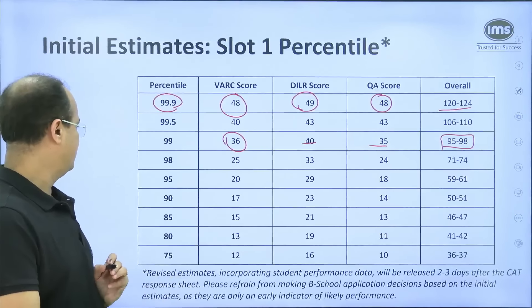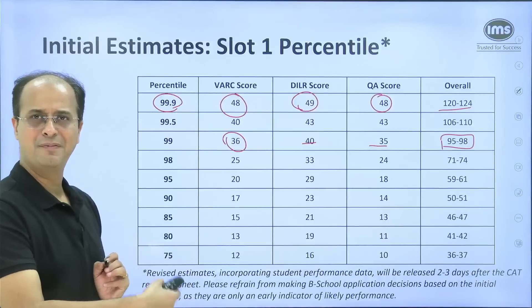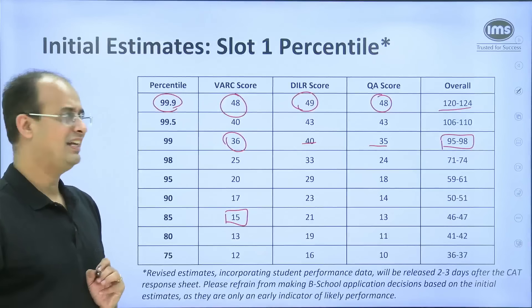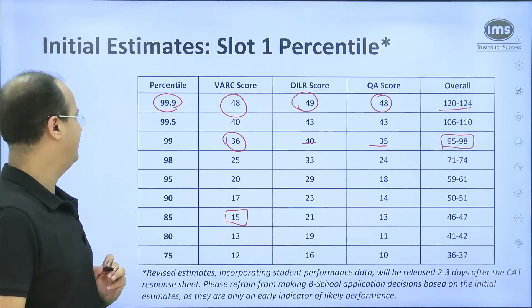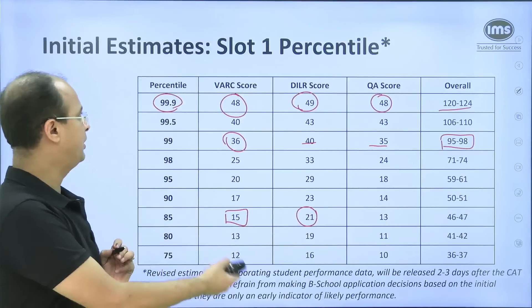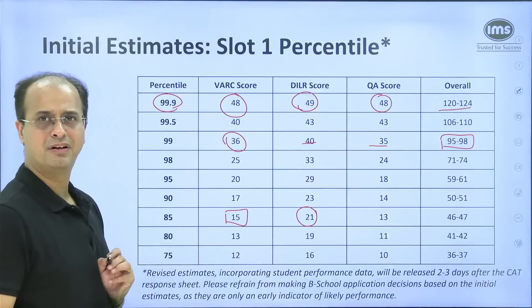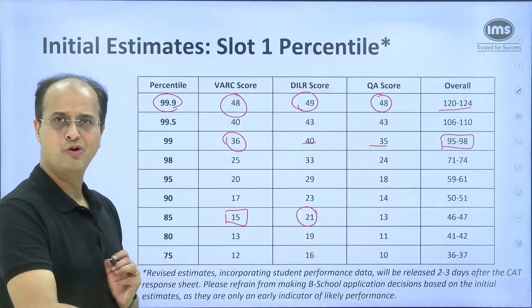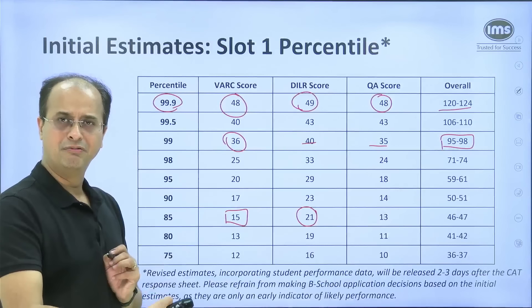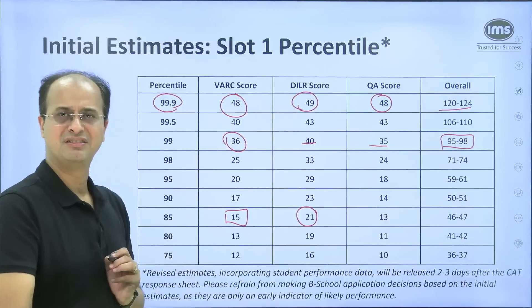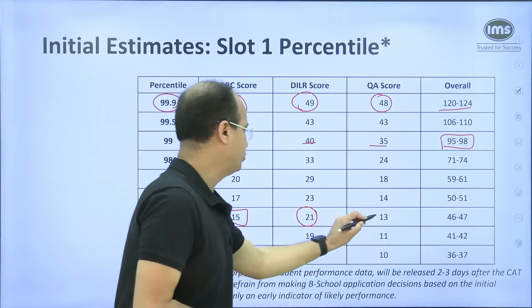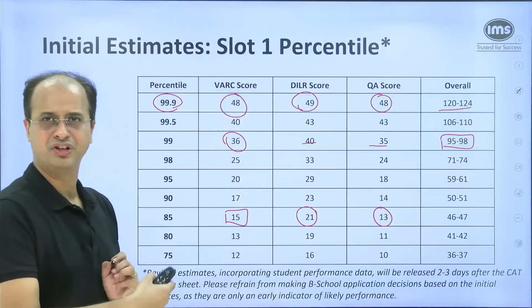When it comes to clearing the cutoffs, we generally place the cutoff at the 85 percentile mark. 5 net questions correct in VARC gives 15 marks, which will take you to the 85 percentile mark. A score of 21 is going to be required to hit the cutoff in DILR — remember, people who could attempt only 2 sets in SimCat have attempted 3 to 3.5 sets this year. For QA, a score of 13 is going to be required.